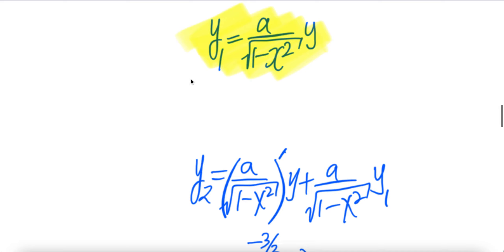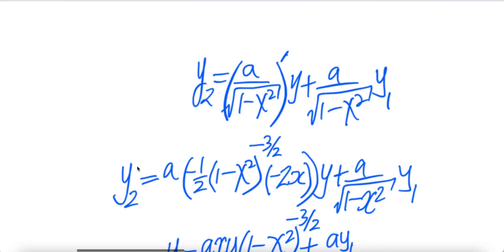Now let us take the second derivative — take the derivative of y₁ with respect to x. The left-hand side y₁ becomes y₂, the second derivative d²y/dx². On the right-hand side we have a product of two functions: the first function y, and the second function 1 over square root of 1 minus x squared. We apply the product rule: derivative of y times the second function, plus the first function times the derivative of the second. The derivative of y is y₁. Writing the second function as (1 minus x²) to the negative half, the derivative brings down negative half times (1 minus x²) to the negative three-halves times negative 2x.